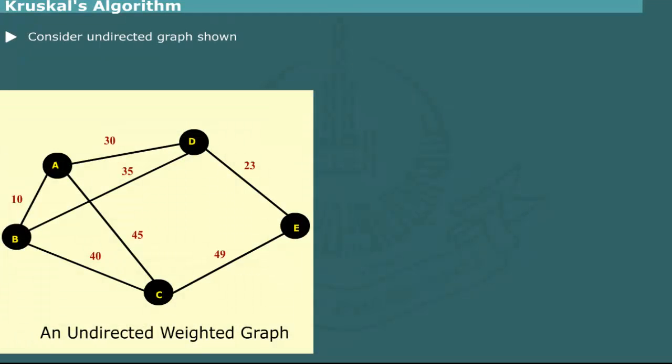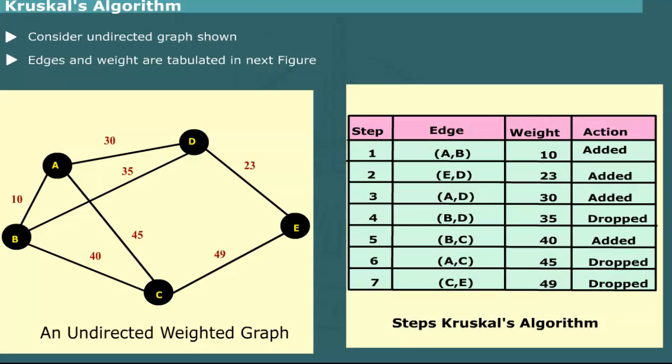Consider, for example, the undirected graph shown in figure. The edges and the weight are tabulated in next figure. The action column shows whether an edge is added or dropped.